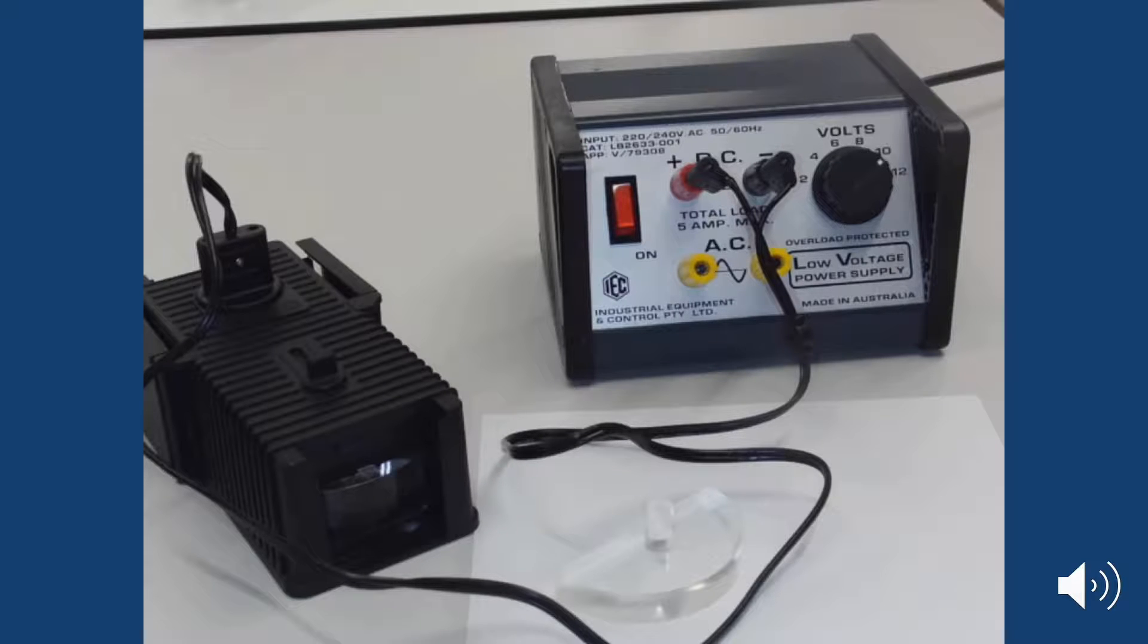Hi everyone. The goal of this video is to show you how to set up the prac for refraction. In this prac you're going to need a power pack, you're going to need a Hodson lightbox, and in the Hodson lightbox you're going to have a semicircular prism which you're going to be needing and you'll need a single slit gate.